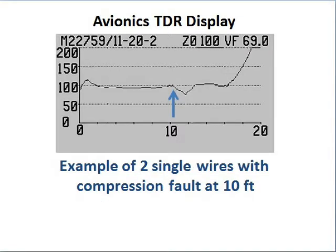The last trace in our series shows two single wires that have been compressed too much at a bend in the harness around the airframe. This is causing a dip in the trace at about 10 feet.